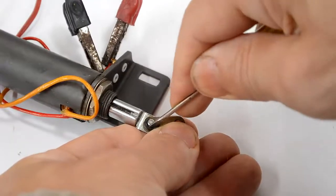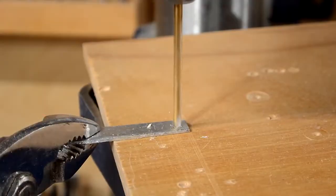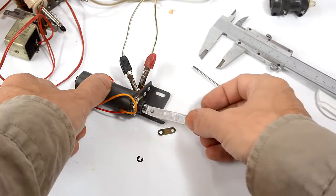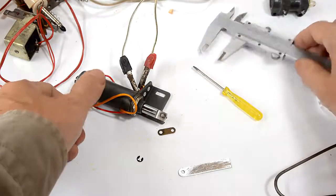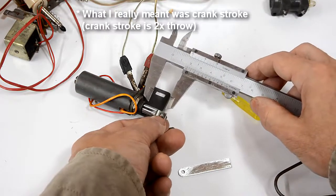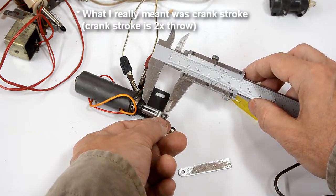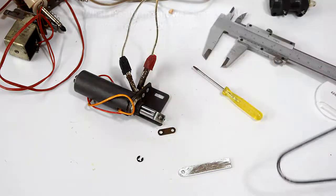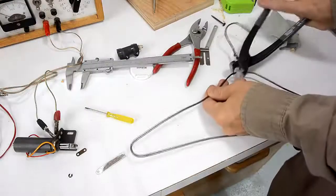Pry that E-clip off without losing it. Now I think I want about 17 millimeters worth of crank throw because that makes the best use of the range where this solenoid actually pulls. And I'll make that crank out of some coat hanger wire.